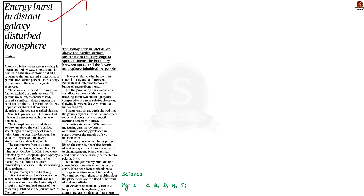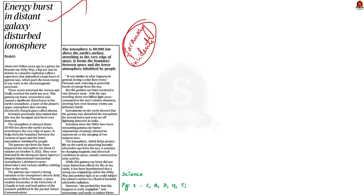This article talks about the impacts of gamma ray bursts on Earth's ionosphere. Large stars at the end of their life undergo supernova explosions, during which they emit bursts of gamma rays. Such a gamma ray burst travelled 2 billion light years and reached our Earth last year, causing a significant disturbance in Earth's ionosphere. This incident shows how far-away incidents can influence Earth's atmosphere. The article notes that if such a gamma ray burst took place closer to Earth, that is within the Milky Way galaxy, the impact on the ionosphere would be severe. However, the probability of such an event is really negligible.